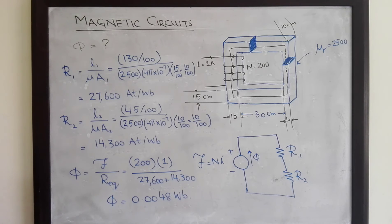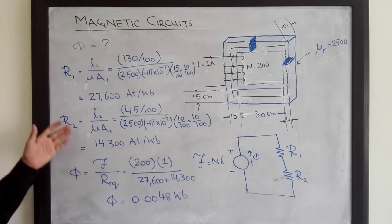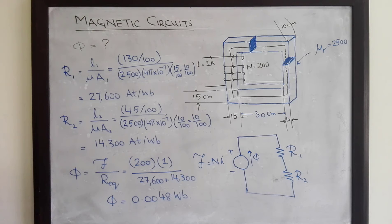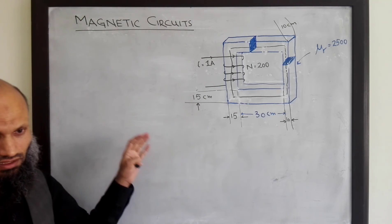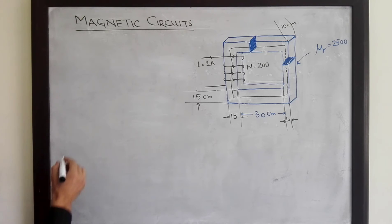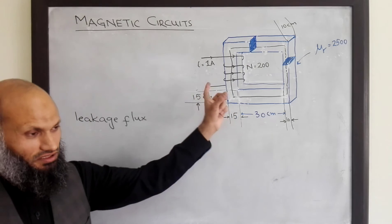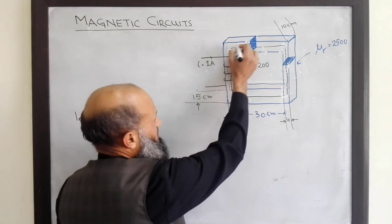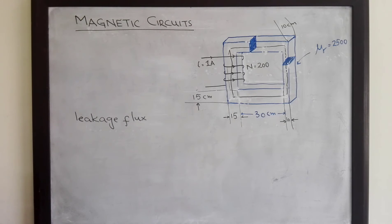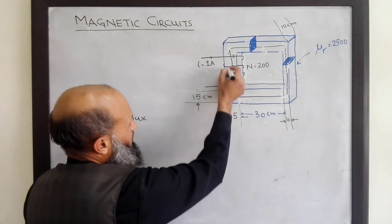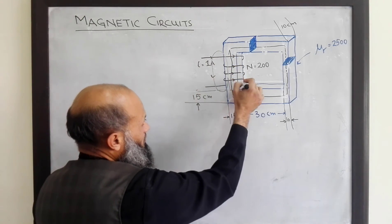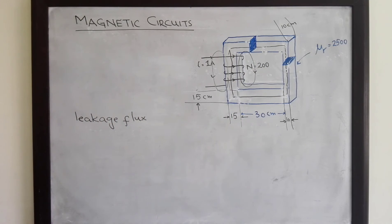A few important points to remember: when we analyze electrical circuits, the computations are very accurate. However, for magnetic circuits, these calculations are less accurate. There are multiple reasons for these inaccuracies. The first and most important reason is leakage flux. In our calculations we assumed that all the flux is constrained to the core with no leakage flux, but in practice flux lines leak into the air, because the air also has some permeability.